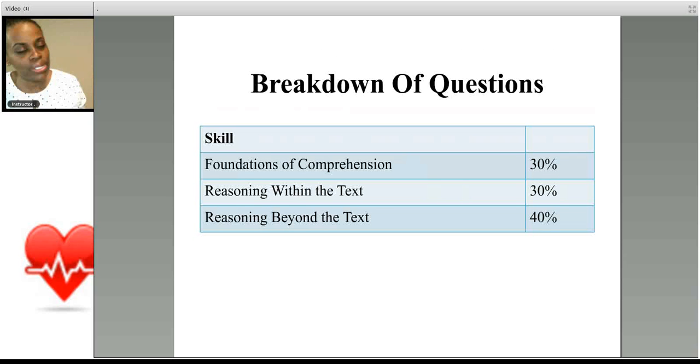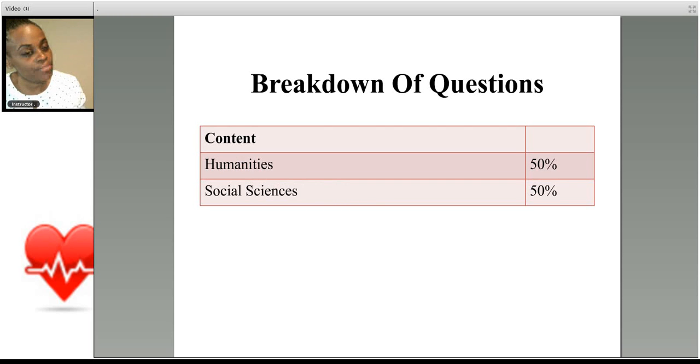So in terms of the breakdown of the questions, you will have 30% foundations of comprehension, 30% reason within the text, and 40% reason beyond the text. And you should not be surprised because the ability to take new information and add it to what's already there, to draw a final conclusion, to make a prediction, that's very important. It's a very important skill for a physician. 50% of your questions will be from the humanities, and the remaining 50% will be from the social sciences. So that's it. That's the breakdown of the exam.